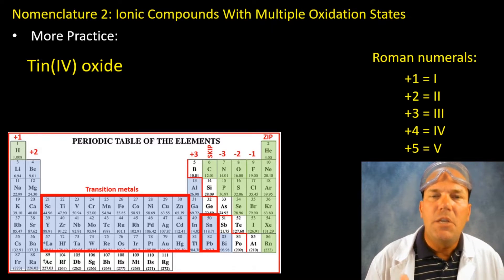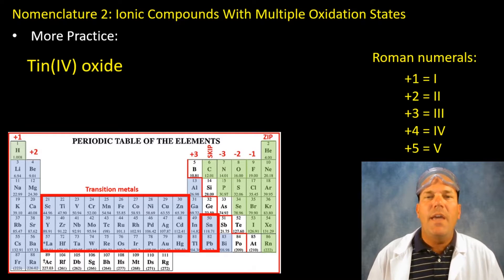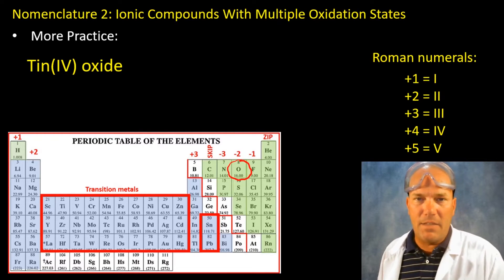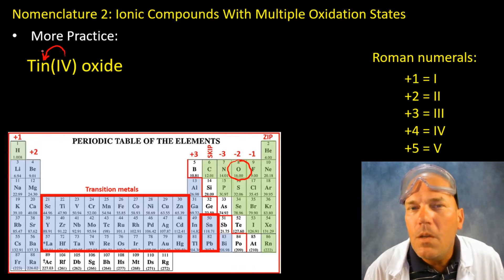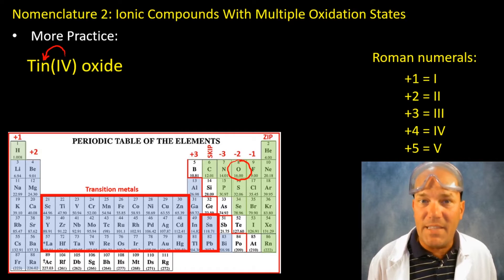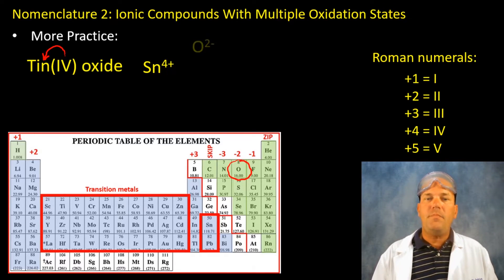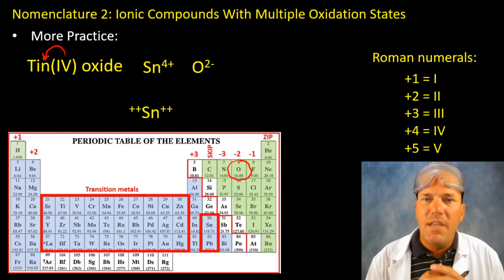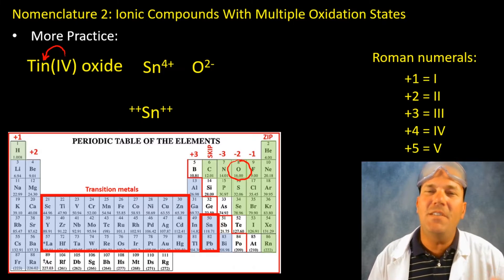Tin four oxide. Please start with what you know. You know oxygen has a minus two charge. So I'm going to come down here, I'm going to circle it. You know that. So you know quite a bit about the anion, the non-metal. Well you also know or you're beginning to hopefully understand that this roman numeral is referring to the charge of the metal, the charge of the cation, not how many. There's not four tins. It's a positive four charge.